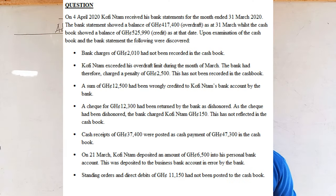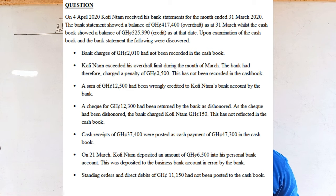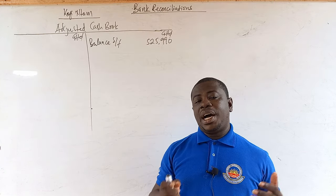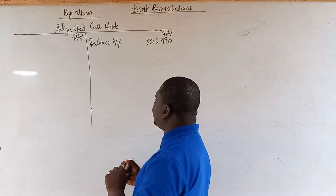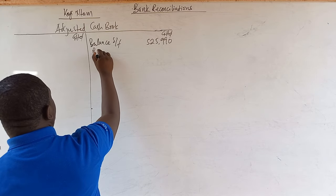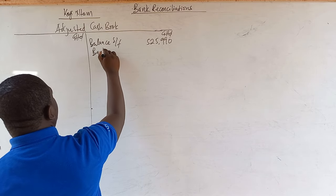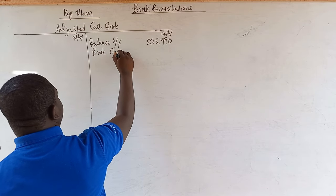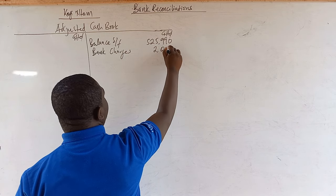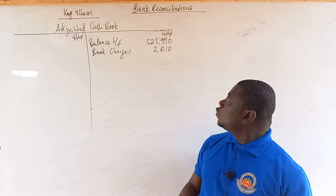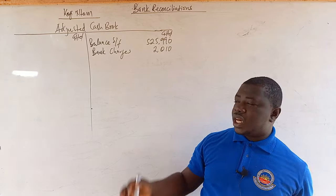The first item is bank charges of 2,010 Ghana cedis that had not been recorded in the cash book. Bank charges are credited to the adjusted cash book, so we record bank charges 2,010 on the credit side.